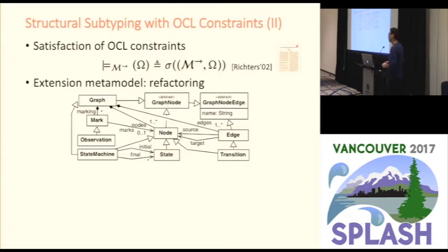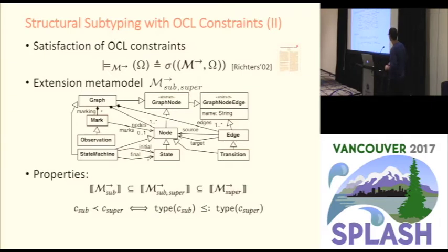We pull up the features defined in the subtype and replace the ones in the supertype with those defined in the subtype — that is, we take the constraints defined in the subtype and pull them up to the supertype metamodel. With this, the model type defined by the extension metamodel subsumes the subtype metamodel and is subsumed by the supertype metamodel, and the generalizations correspond to structural subtyping.